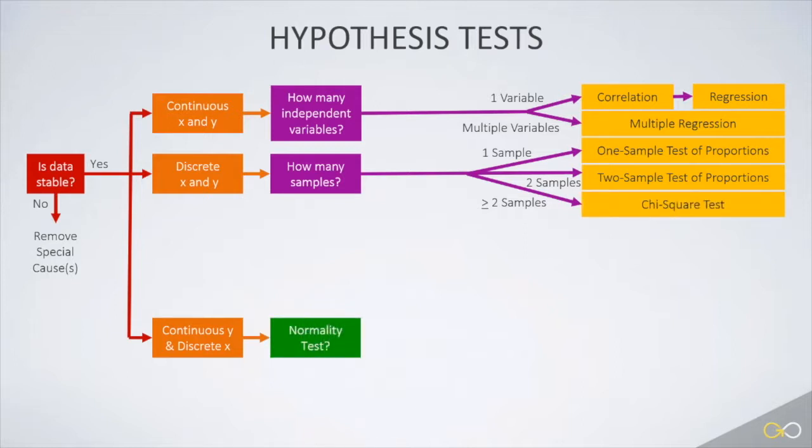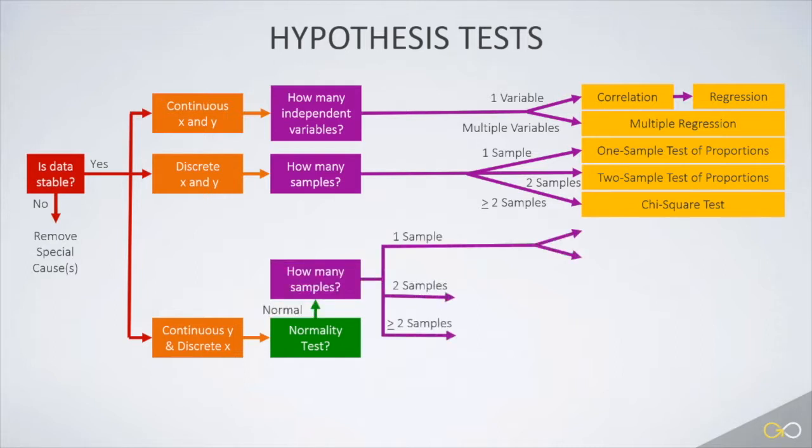Now consider the case where one of the variables is discrete and one is continuous. At this point, you need to determine if the data is normal or not. If the data is normal, we will ask our same question about the number of data samples in the analysis. If it's just one sample, do a one-sample t-test or a one-sample test for variance, depending upon the effect you want to analyze.